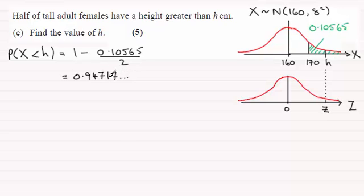So remember then, this is all the area to the left of h, which will consequently be all the area to the left of this z value. So if I shade that in there, can you see that this area here then is represented as 0.94717, and so on.